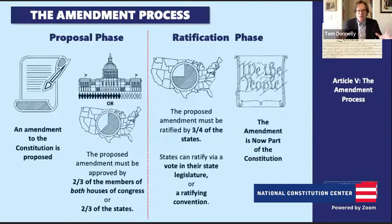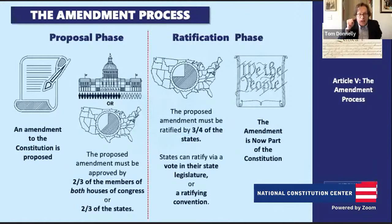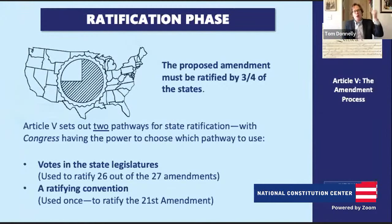When we're talking about this proposal phase, it's one really difficult step: you have to get two-thirds of each house of Congress or two-thirds of the states to even get the proposal formally sent to the states for ratification. Once that happens, we then enter the ratification phase — the phase where we say yes or no to any proposed amendment. The popular threshold is really, really high: a proposed amendment has to be ratified or approved by three-fourths of the states.